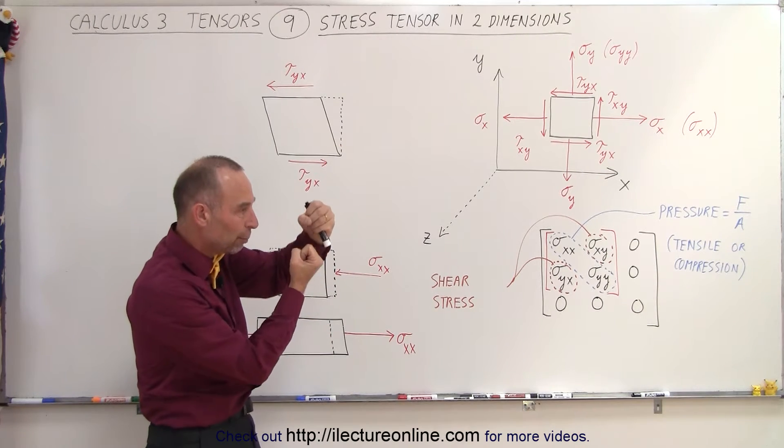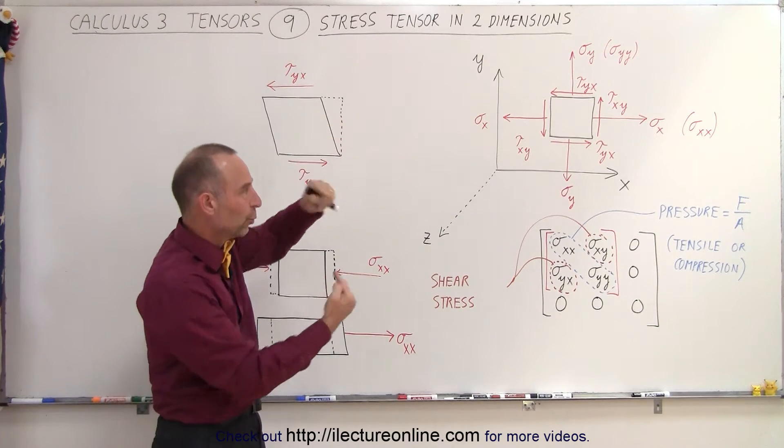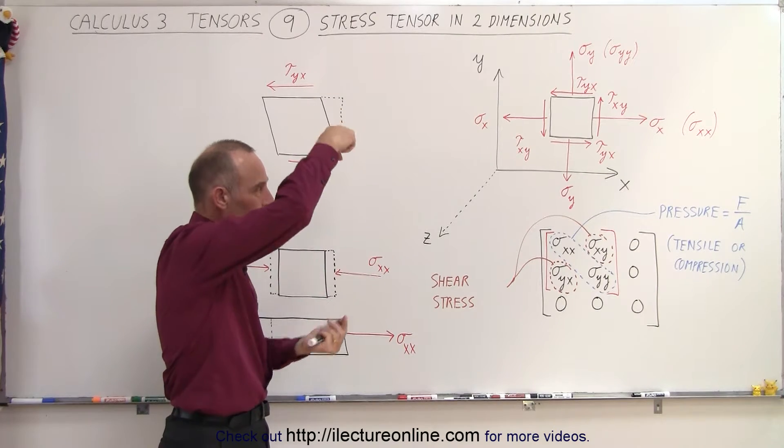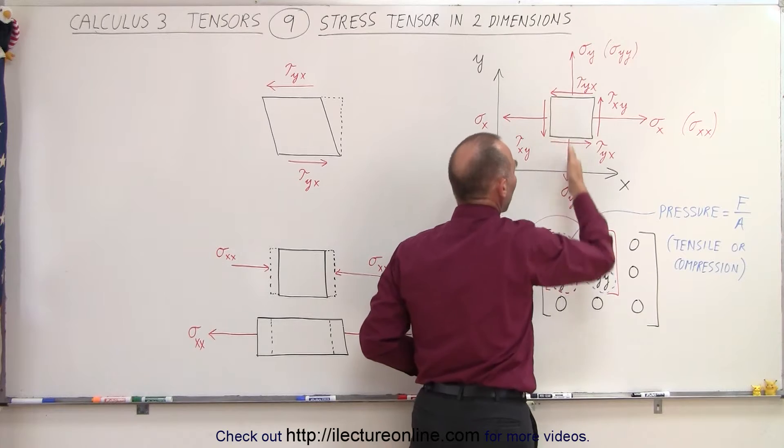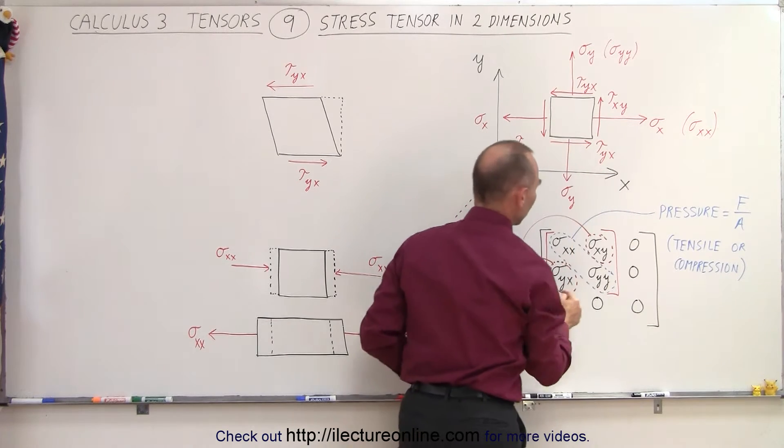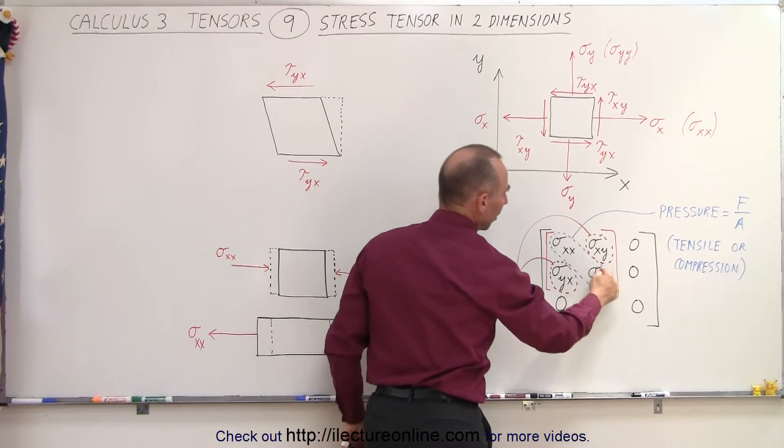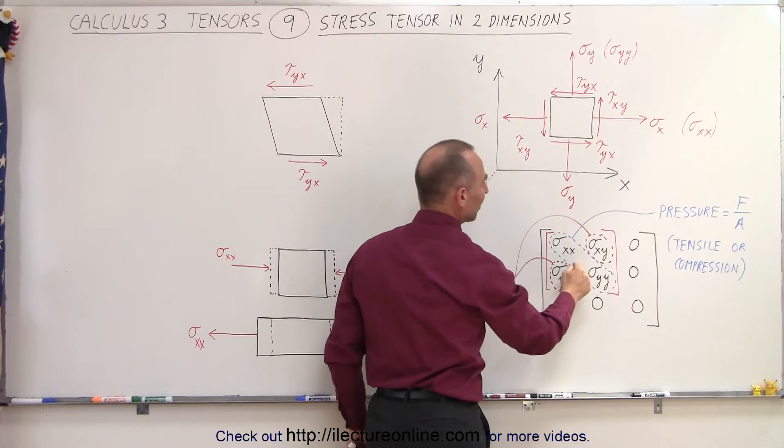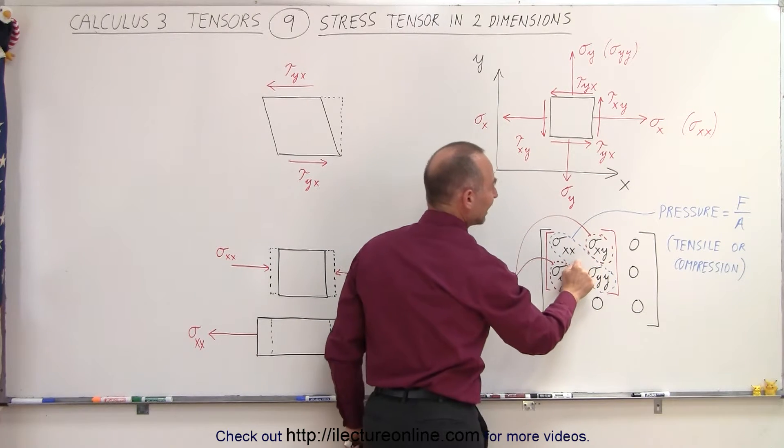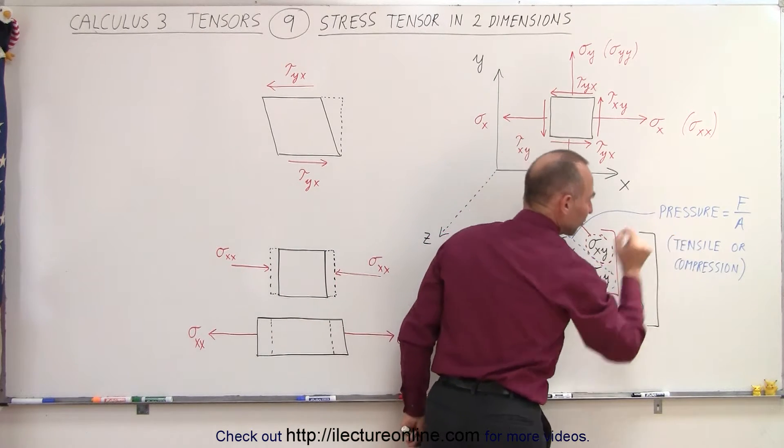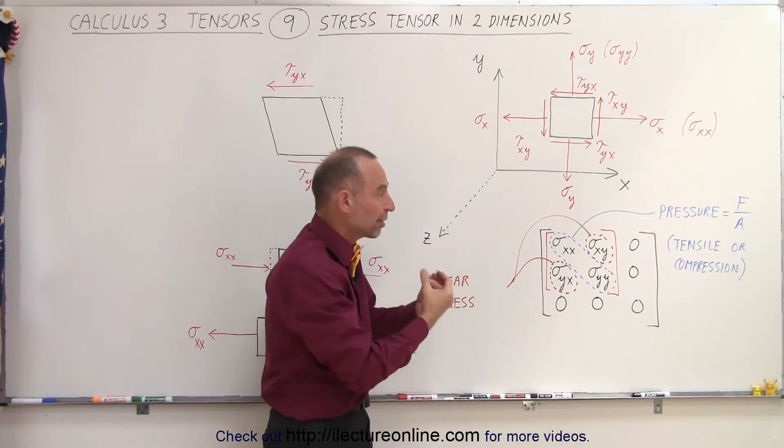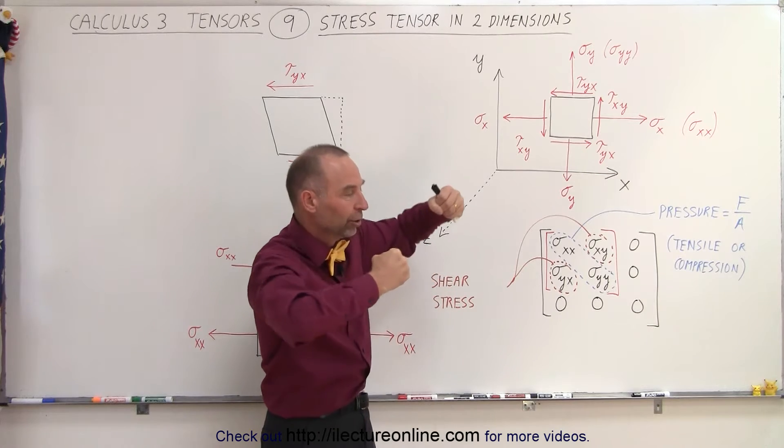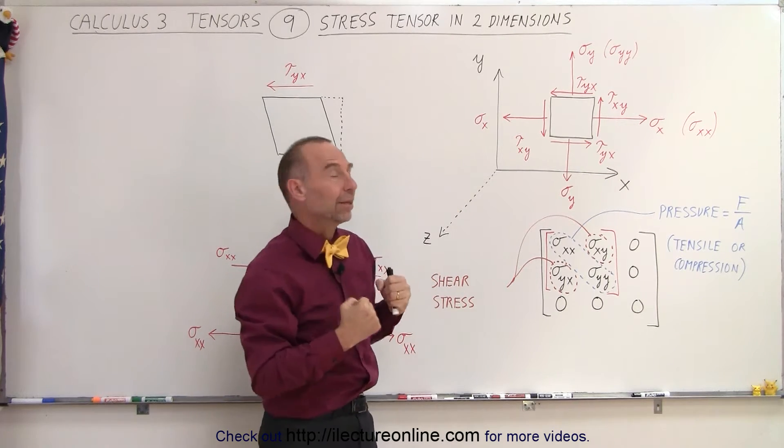We have forces either pulling away or pushing towards the two opposite sides - in the x-direction and y-direction. The two components of the tensor that represent that are the diagonal components, and they represent the pressure term, or better yet, tensile or compression forces - pulling them apart or pushing them together.